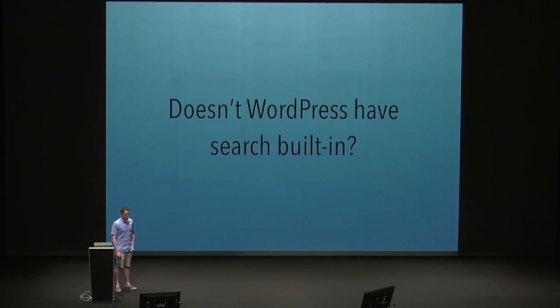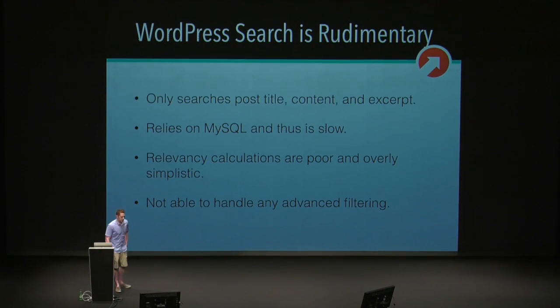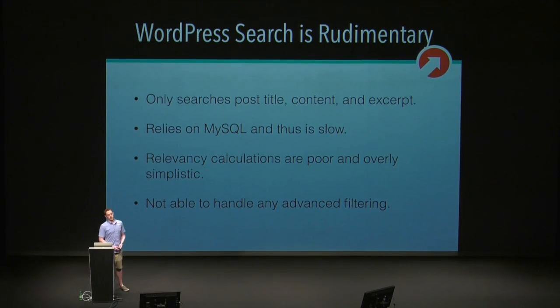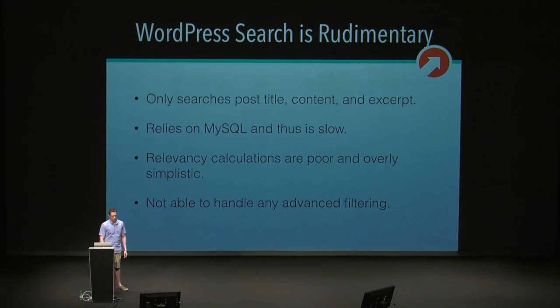So, doesn't WordPress have search built in? That's the big question. WordPress search is pretty simple, and anyone who runs a WordPress website should know that. By default, WordPress only searches the post title, post content, and excerpt. It relies on MySQL, which can be slow in certain situations. Search results and relevancy calculations are pretty simplistic and aren't able to handle a lot of customization. And there isn't really a way to do any sort of advanced filtering.